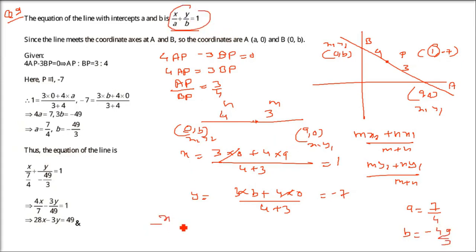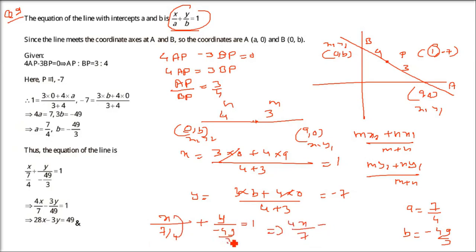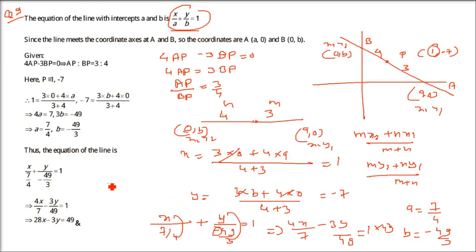Now put these values in the original equation: x/(7/4) + y/(-49/3) = 1. This becomes 4x/7 - 3y/49 = 1. Multiplying both sides by 49 (the LCM), we get 28x - 3y = 49. This is the equation for question 9.